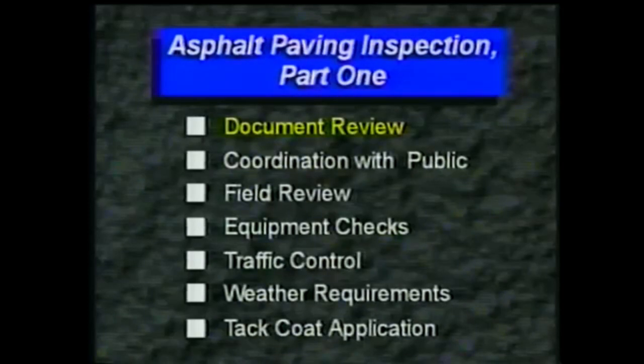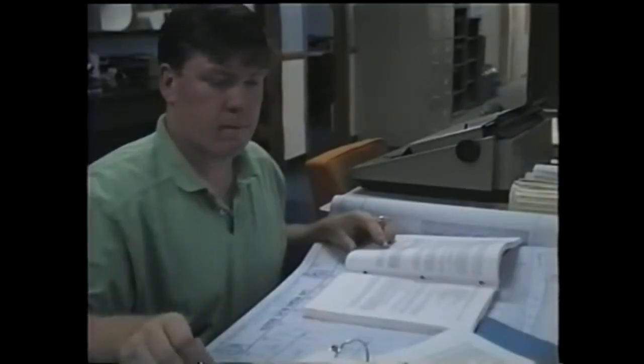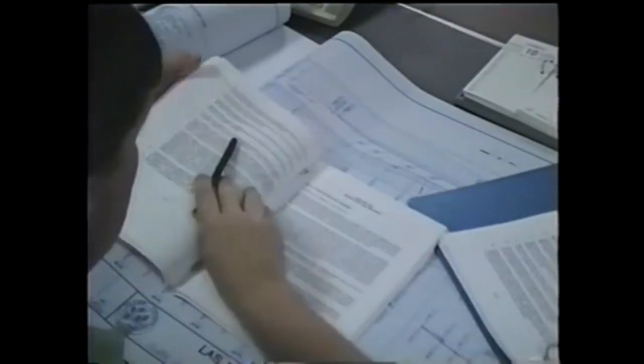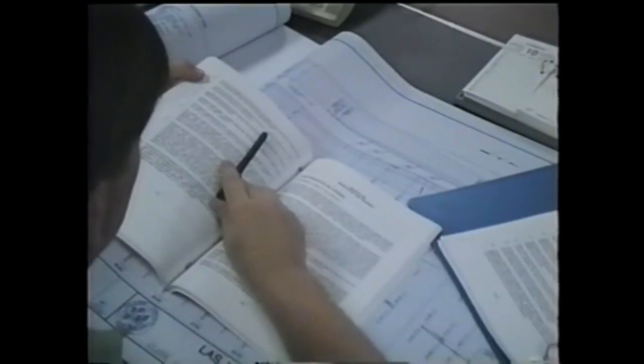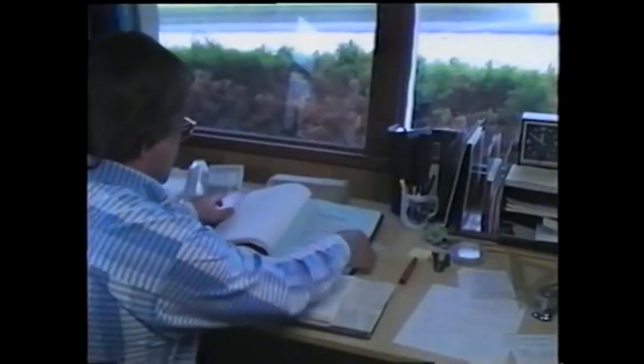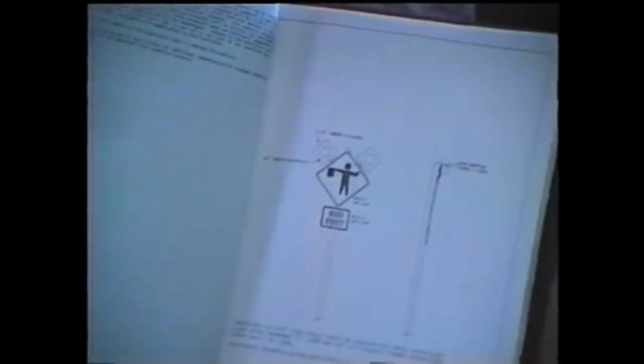Document review. First, as with any project, review the contract documents. This includes your agency's bid specifications, including amendments, any special provisions, the appropriate sections of the construction manual, and the traffic control plan. Paving details can vary significantly from one job to the next, especially for traffic control. The traffic control plan identifies the types of signs and devices necessary, as well as their placement. So always study it carefully.